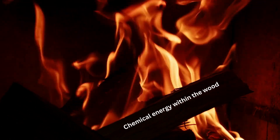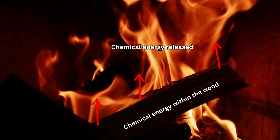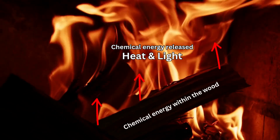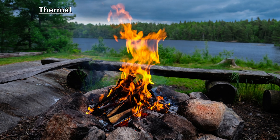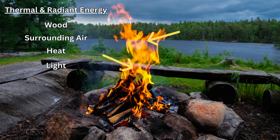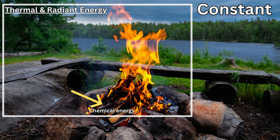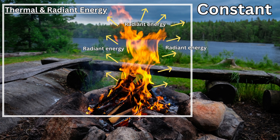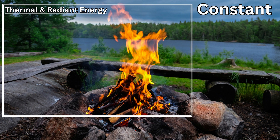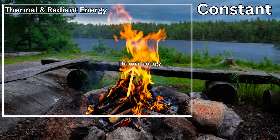Think about the straightforward example of burning a piece of wood. Chemical energy is released during the burning of the wood in the form of heat and light. The thermal and radiant energy of the system, which includes the wood, the surrounding air, and the heat and light released, remains constant, despite the chemical energy held in the wood being transformed into thermal and radiant energy. The idea that energy is never created nor destroyed, but merely transforms from one form to another, is demonstrated by these examples.